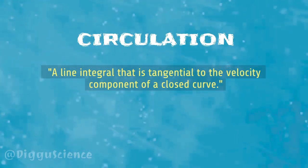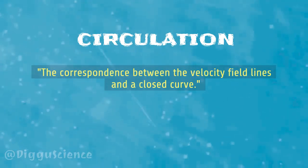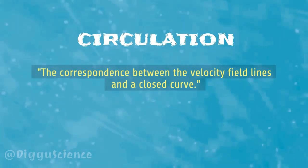In simple terms, circulation can be referred to as the correspondence between the velocity field lines and a closed curve.